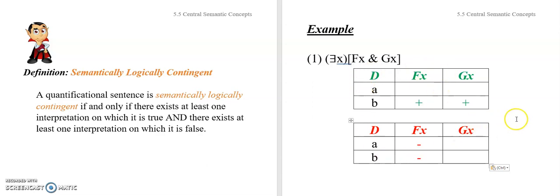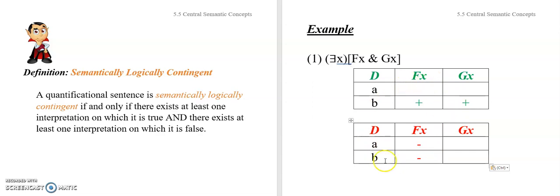Here's one way of doing it. Here's an interpretation according to which this sentence is true: at least one thing in the domain satisfies the description, namely object B. Here's an interpretation according to which the same sentence is false: nothing in the domain satisfies the description because nothing in there is F. Therefore, this presentation of two interpretations proves that the categorical I sentence is in fact semantically logically contingent.